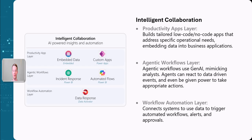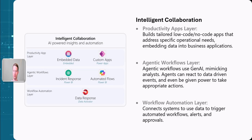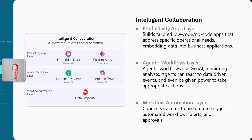Finally, we have the workflow automation layer. This is really a response mechanism — when we want set actions triggered by certain thresholds in our data, this can automate a process such as sending out an alert. For example, if our sales have dropped 10%, we can automate sending an alert so we know something has happened.